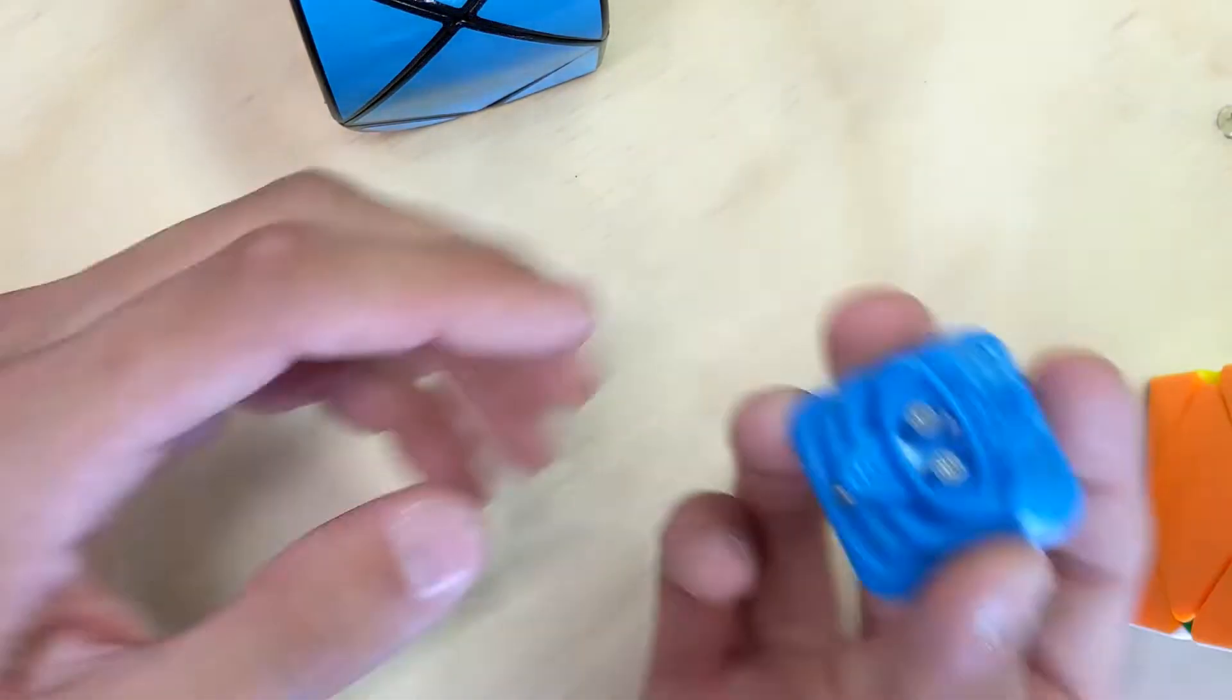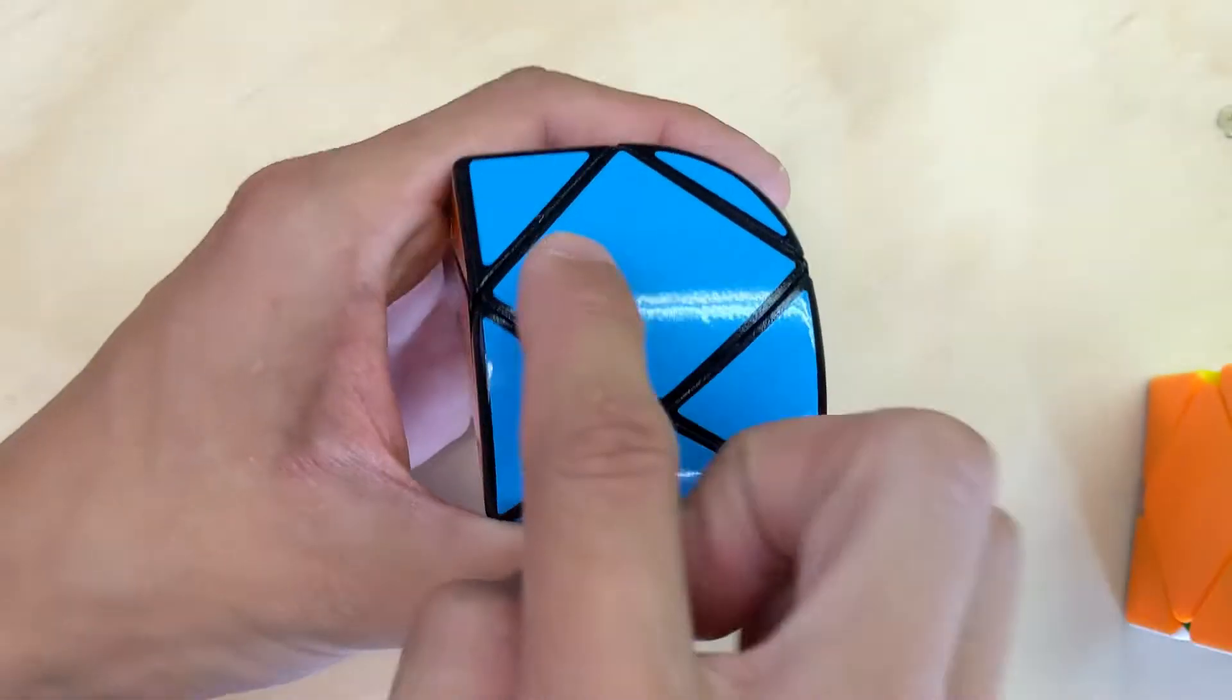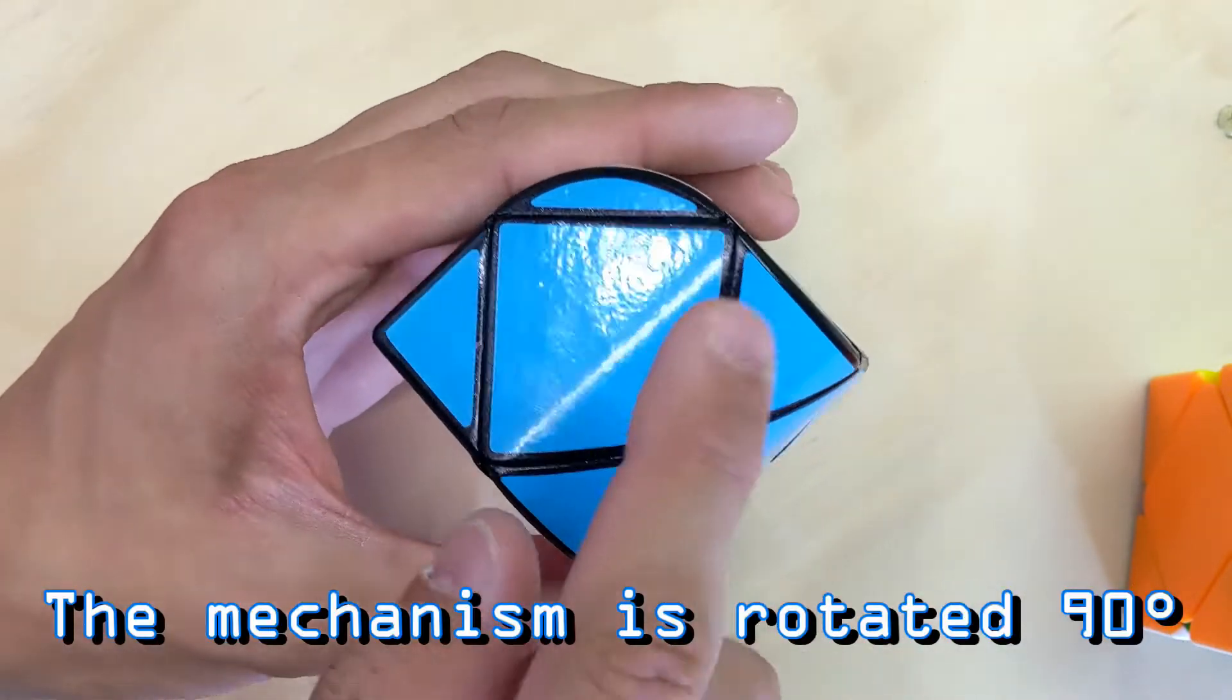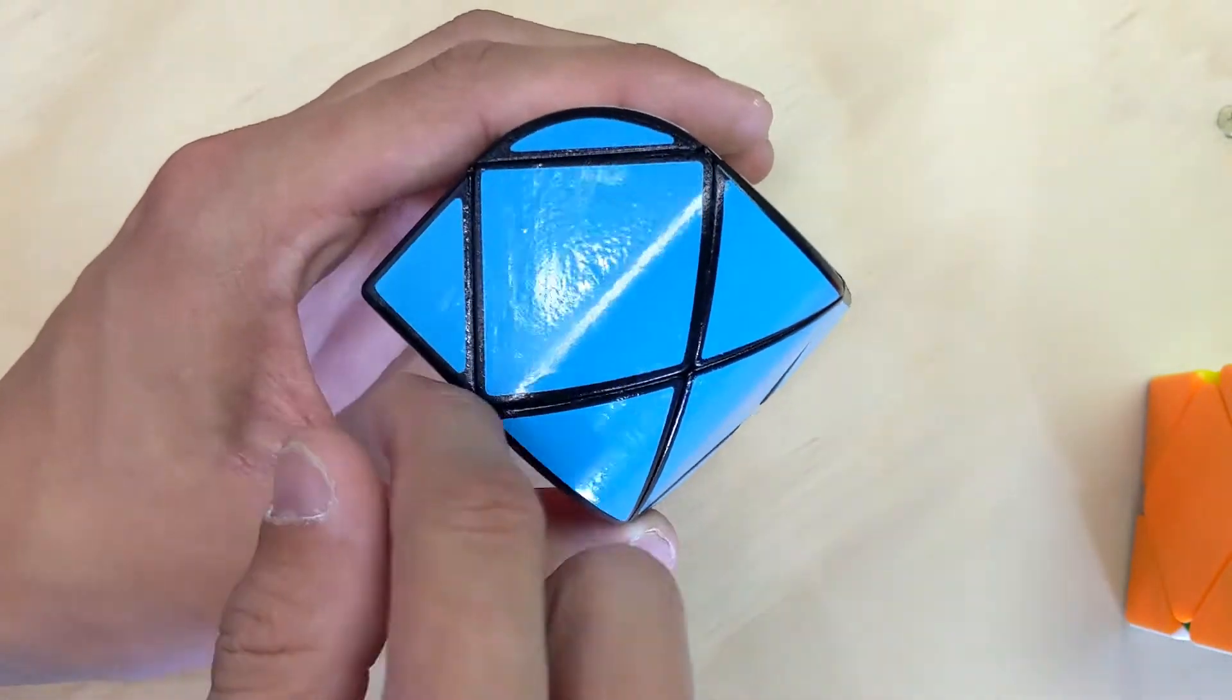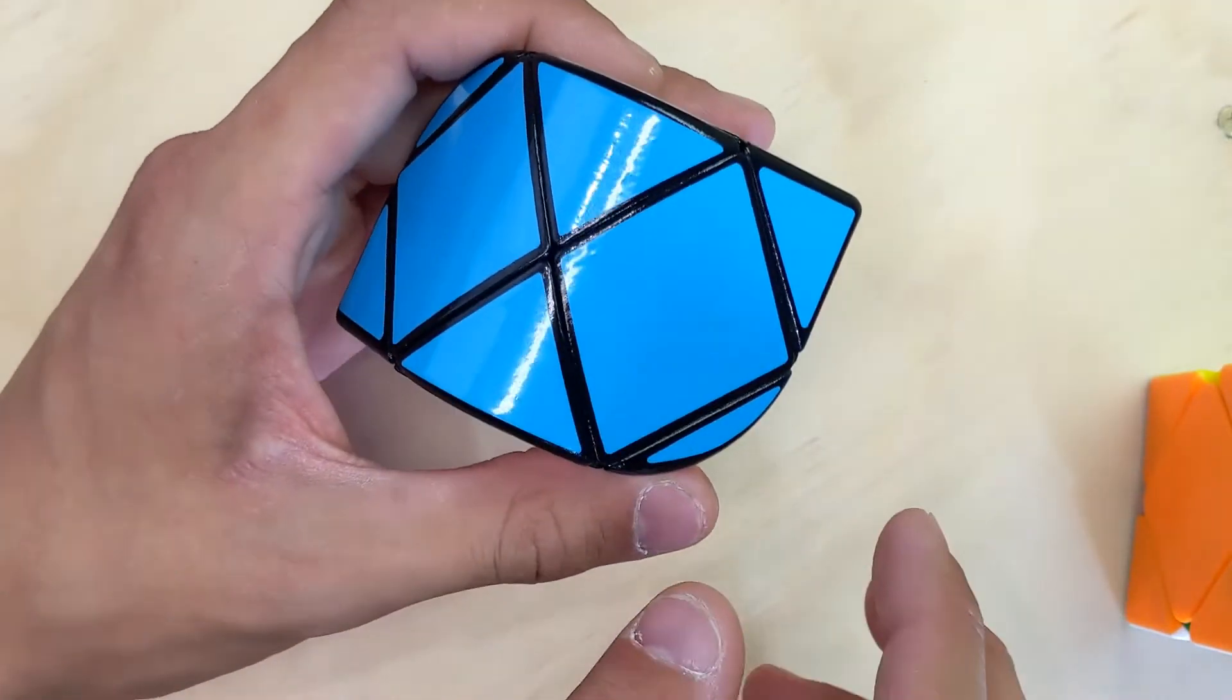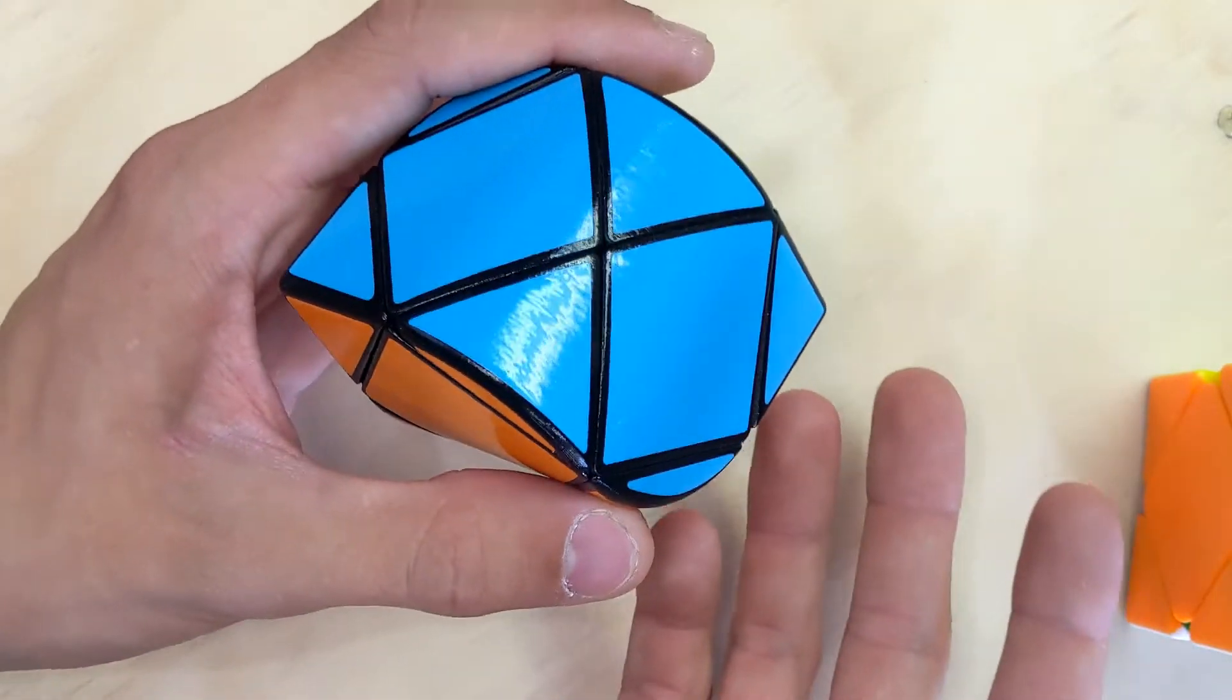And because of how this piece shape also is, that means that these two squares can actually never replace each other. So, this one will always be in this spot, and this one will be always in this spot when solved. They can be switched mid-solve, but they won't be in the correct spot.